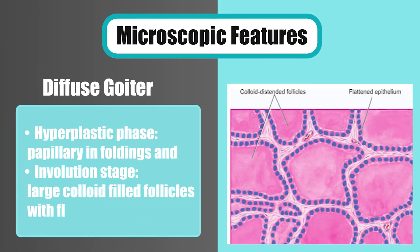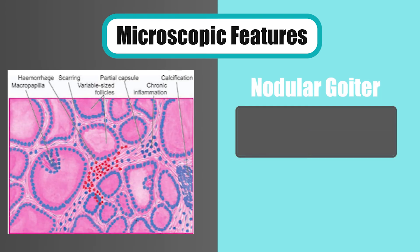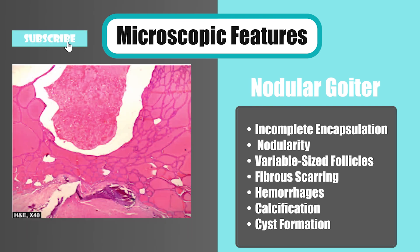Feature number six is microscopic features. In diffuse goiter, there is a hyperplastic phase with papillary enfoldings, and an involution stage with large colloid-filled follicles with flat epithelium. But in nodular goiter, there are incomplete encapsulation, nodularity, variable-sized follicles, fibrous scarring, hemorrhages, calcification, and cyst formation.